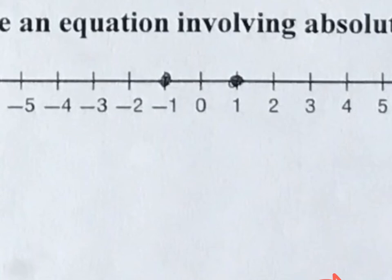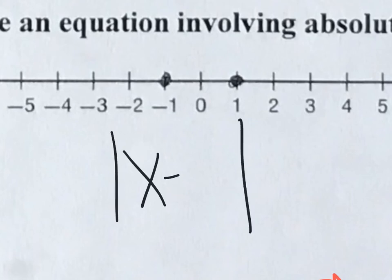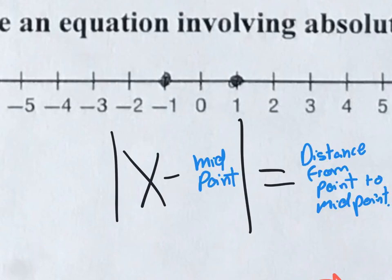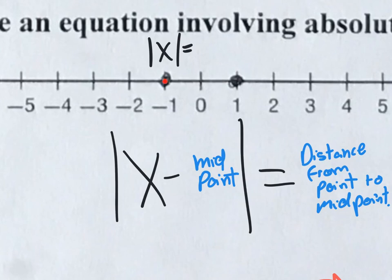Remember the setup: x minus the midpoint inside absolute values, equals the distance from the point to the midpoint. For this last one, the midpoint is zero, so there's no number inside — it's just the absolute value of x, because x minus zero is still x. The distance from the point to the midpoint is one. So the equation is the absolute value of x equals one.